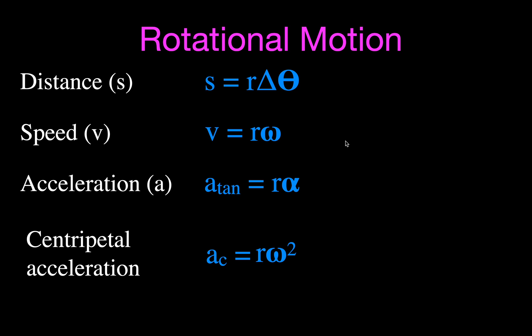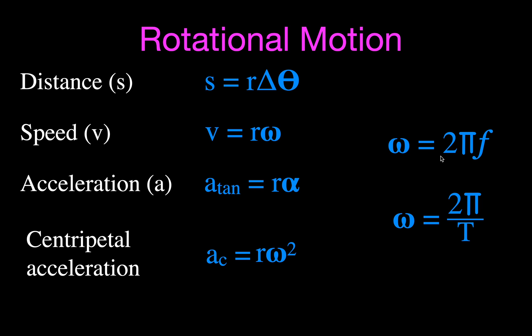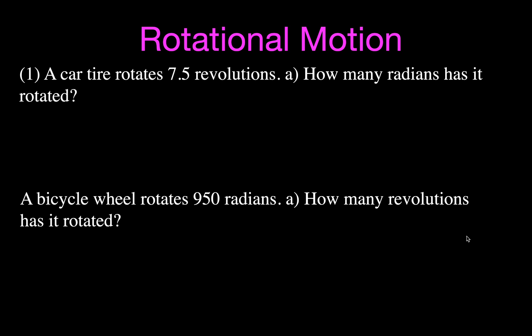We also have equations relating linear motion to rotational motion. It's a good idea to write down those four or five rotational kinematic equations and the conversion equations before starting. Two other important equations: angular velocity equals two pi times frequency, and because frequency and period are inversely proportional, angular velocity also equals two pi divided by the period T.